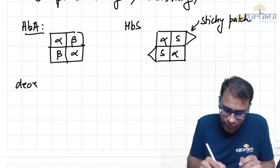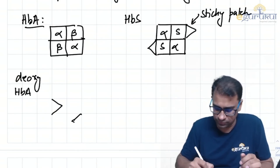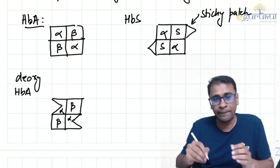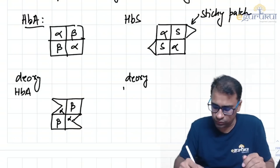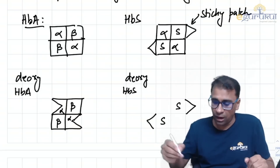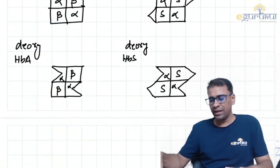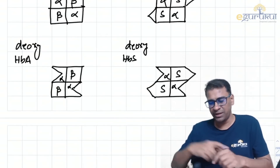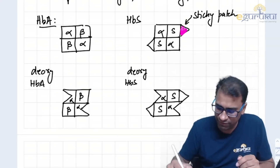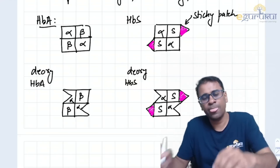In deoxy HbA, the alpha chain will have a complementary patch, while the beta remains normal. Now in deoxy HbS, the beta chain has its own sticky patch because it has changed to S, and the alpha still has a complementary area. So the sticky patch on beta will attach to the next available hemoglobin if that hemoglobin has a complementary area for the sticky patch.